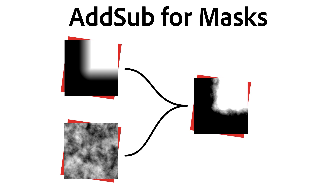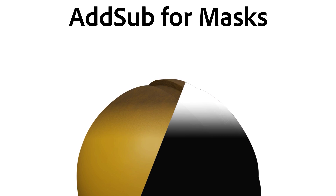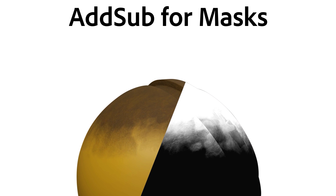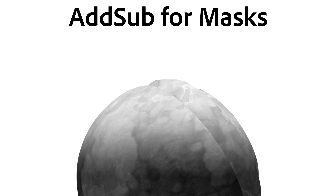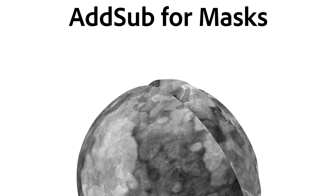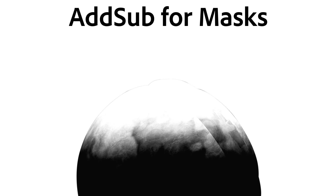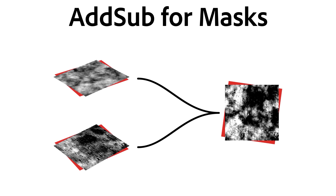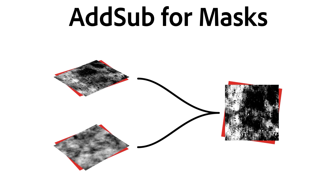For masks, Add Sub has the unique ability to only affect transitions, something not many blend modes do. In those cases where you have a mask that needs grunge and detail in the transitions from black to white, Add Sub is a perfect match. Just keep in mind your top mask needs to have those blurry transitions and your bottom grunge has a good range of detail and values. Add Sub is also useful in other, less obvious cases when combining grunge maps — just remember to try to swap the order for a different variation.